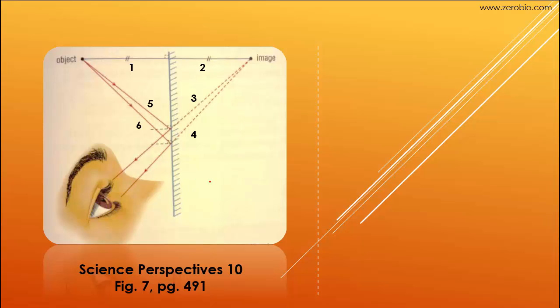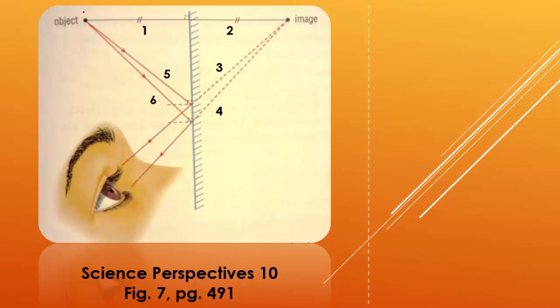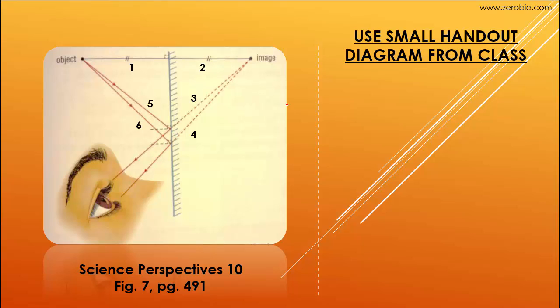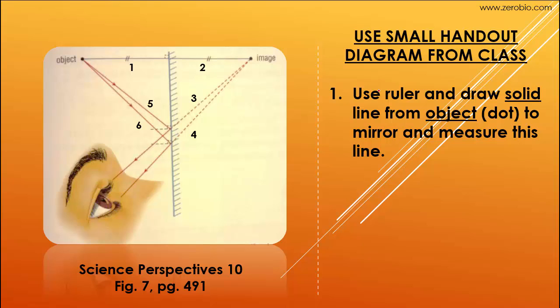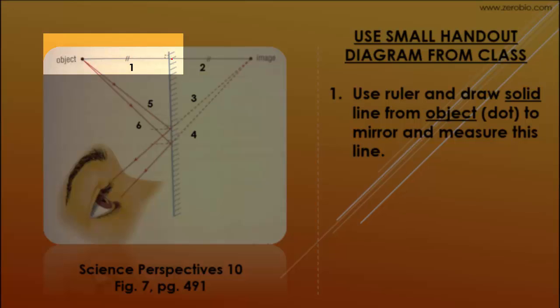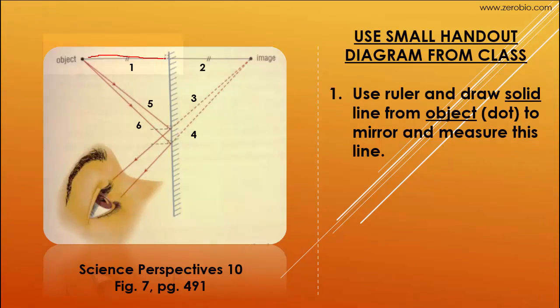This is figure seven on page 491 in your textbook. And what we want to focus on is the object here, the image here, the mirror, and the eye. So what you will have on your diagram is a dot for the object, the mirror, and just an eye without the eyebrow and the rest of the stuff. You don't have the image. So here is what you're going to do. You're going to follow these steps. Choose one of the diagrams. You've got to choose one of them using your small handout, and you're going to do this. You're going to use your ruler, and you're going to draw a solid line from the object, which is the dot, to the mirror, and you're going to measure that line. So you've got the mirror there. You're going to go from the object perpendicular to the mirror and hit the mirror. So this is going to be a solid line right here, and you're going to measure that distance.